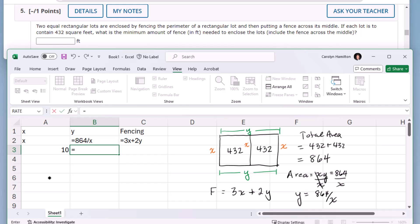then y would be 864 divided by that x, and the total amount of fencing is 3 times the x length plus 2 times the y length.